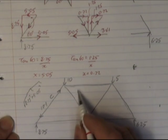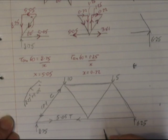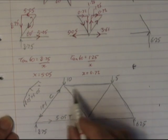And we just go through and do each of our members. This one here, we already know it will be 5.05 going that way. So it's in tension. And we just work through our framework.